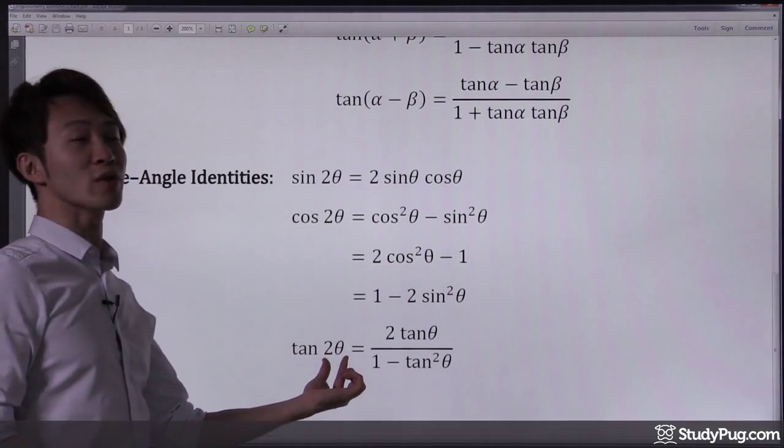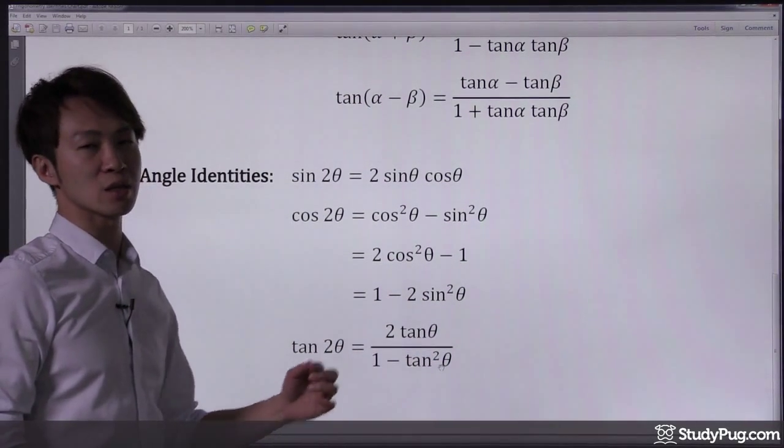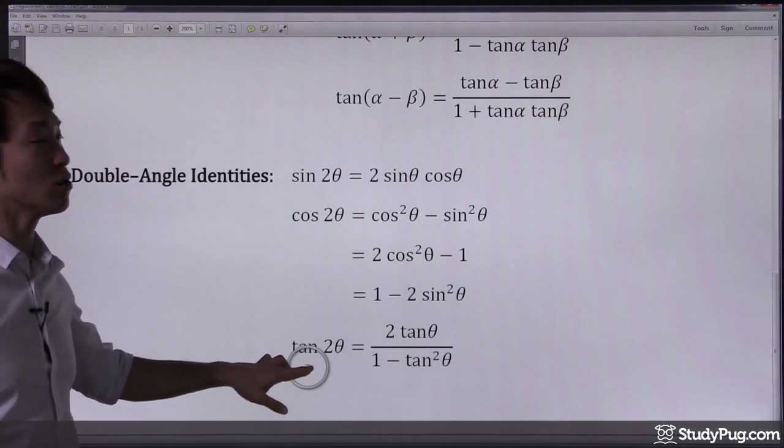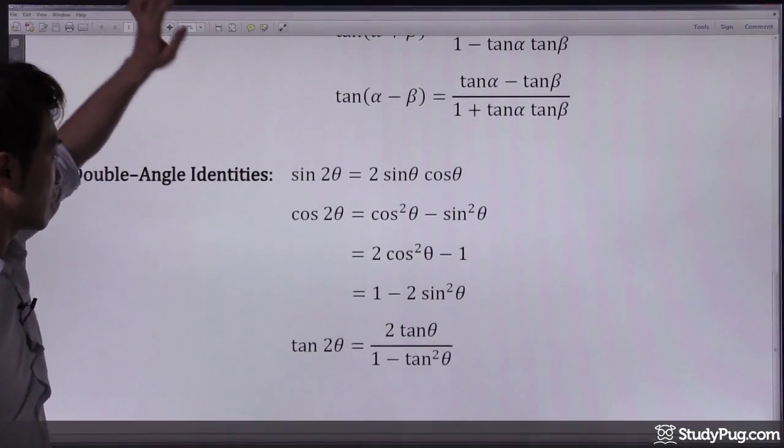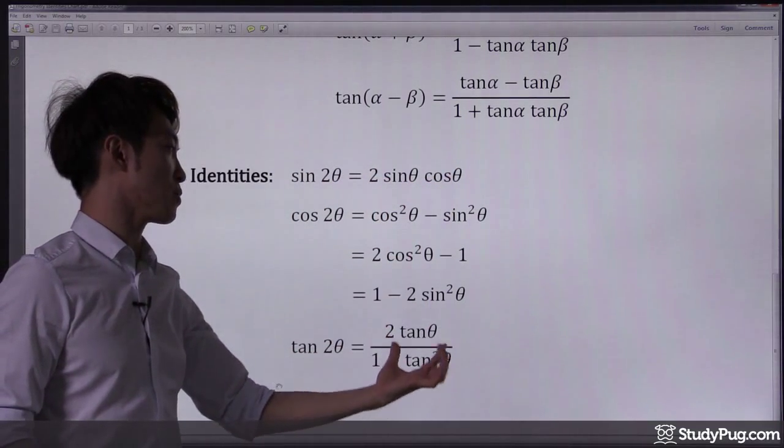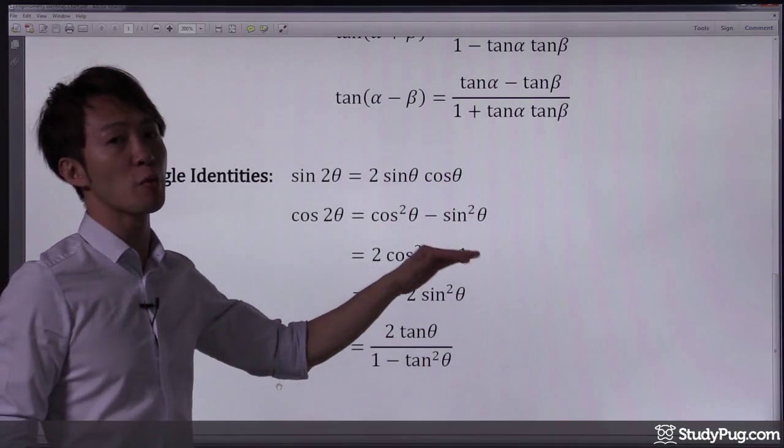Tangent 2 theta equals this expression. In a way, sine and tangent double angle, they are very easy, right? Because there's only one formula for them. But for cosine, there are three formulas.